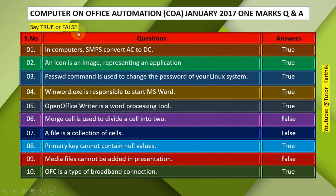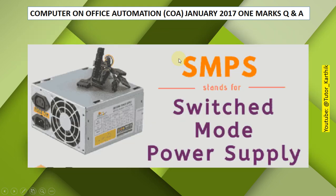True or False. Question 1: In computers, SMPS converts AC to DC. Answer: True. SMPS (Switched Mode Power Supply) is part of the computer system that converts alternating current to direct current.